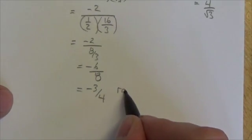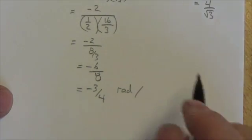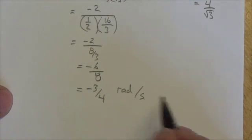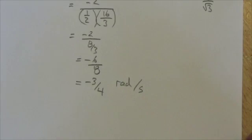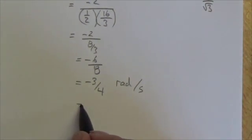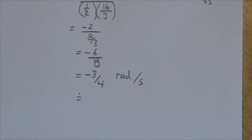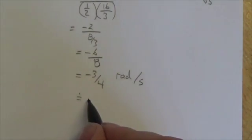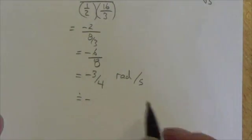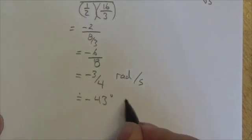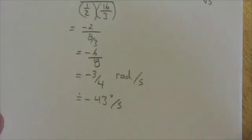And this is going to be negative 3 quarters radians per second. Now, if you don't quite like that, you can convert that to degrees if you'd like. We can convert that to degrees. So negative 3 divided by 4, we could multiply that by 180, divide that by π. And what we're getting here is negative, if you round that, negative 43 degrees per second. So it's dropping 43 degrees a second at that particular instant in time.